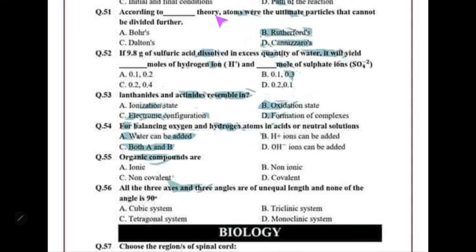According to Dalton's theory, atoms were the ultimate particles that cannot be divided further. If 9.8 grams of sulfuric acid is dissolved in excess water, it will yield how many moles of hydrogen ions and sulfate ions?